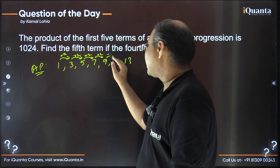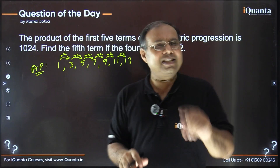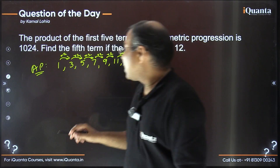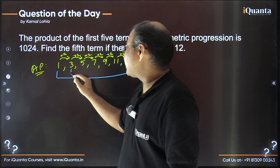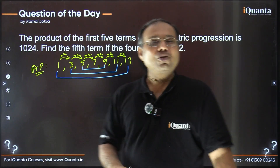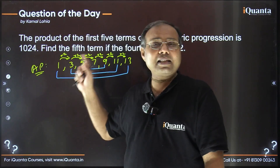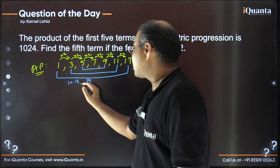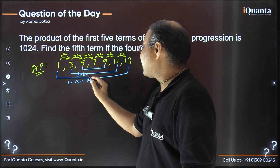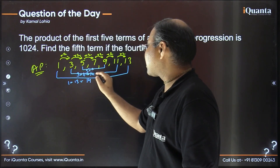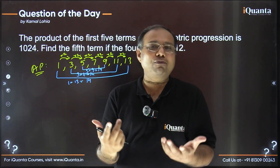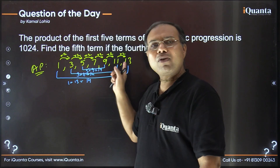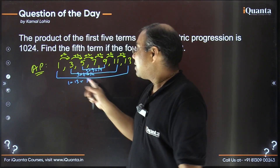The important concept in AP is: if you add the first and last term, second and second-last term, third and third-last, each pair sums to the same value. Here: 1 + 13 = 14, 3 + 11 = 14, 5 + 9 = 14. So the middle number is just the average of any pair — the arithmetic mean, which is 7.